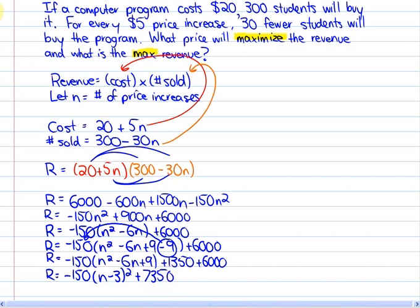Now if we think about this according to a graph, which we can do, our axes, in this case, would not be an x and a y axis. They've been replaced with a revenue axis and a number of price increases axis. The vertex of this point is n is equal to 3.